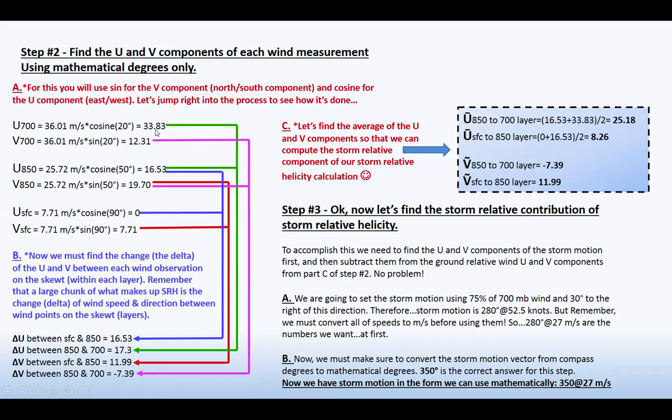So after you do that, you do 36.01 meters per second times the cosine of 20 degrees. That's the direction the wind is moving toward at 700. And that'll give you a value. And then from there, you'll go ahead and do your V component. So the V component is the same speed, 36.01 meters per second, times the sine of 20 degrees. That'll give you 12.31. And then you'll do that for the U's and V's for every level.